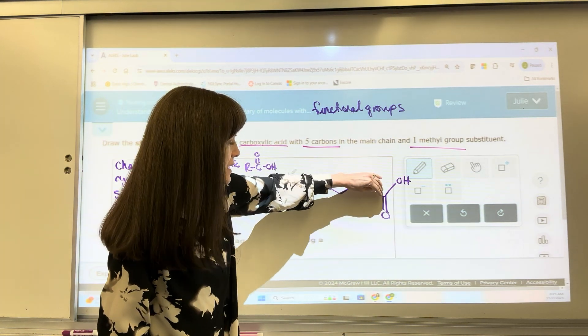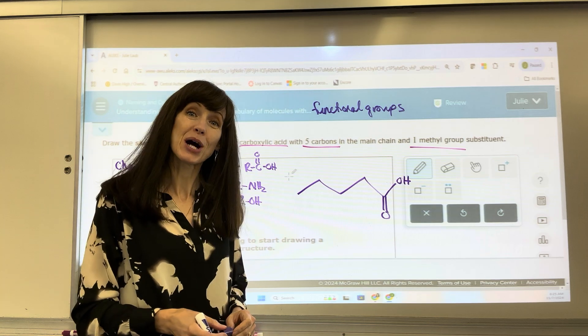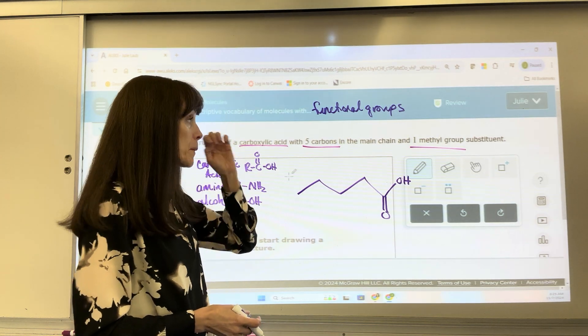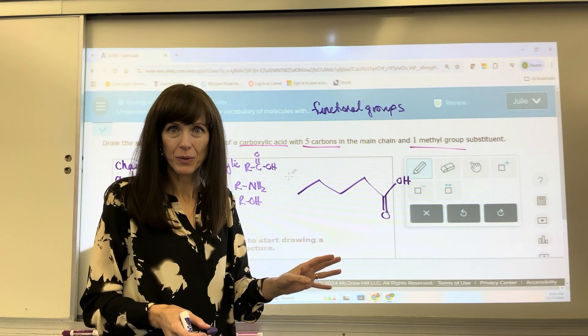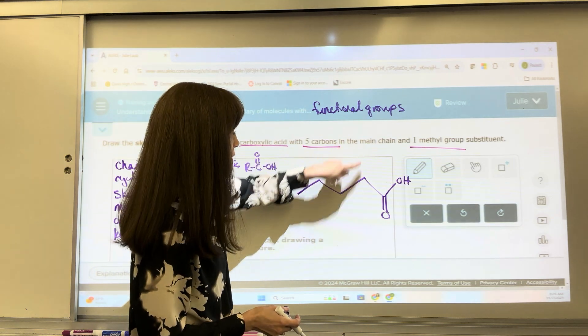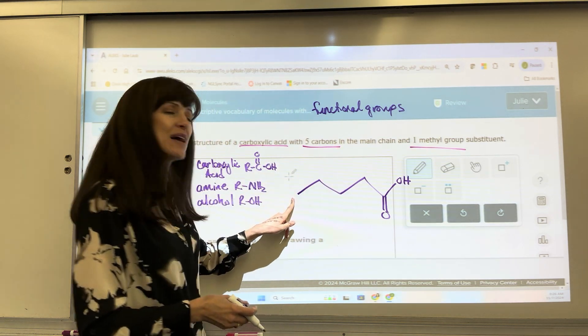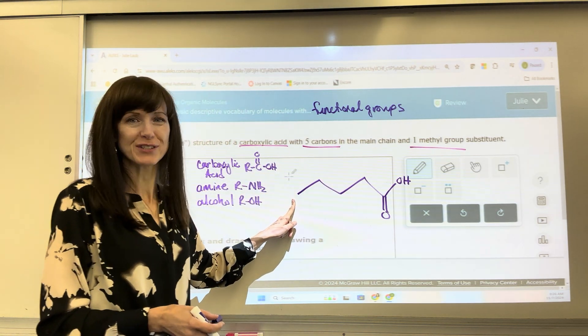Together, that last carbon, double bonded oxygen, OH, that's our carboxylic acid. Now, the methyl group, I can put anywhere. I could put a methyl group here, here, here. I can't put it on the end. Think about that for just a second. Why can't I put that on the end?